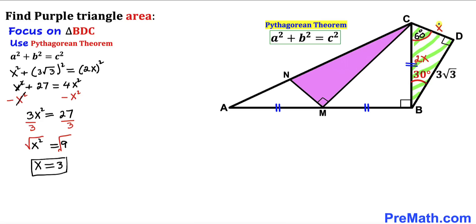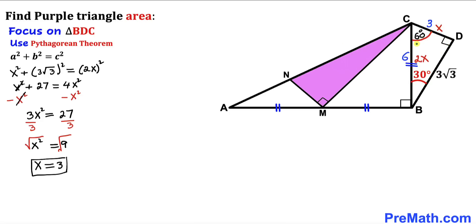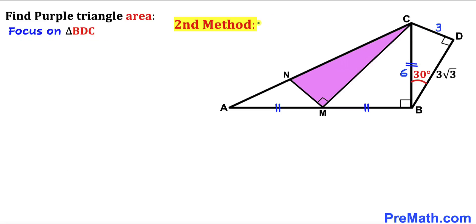Replacing x with 3, this side length BC turns out to be 6 units because 3 times 2 equals 6. Now let me show you the second method to find this side length BC.